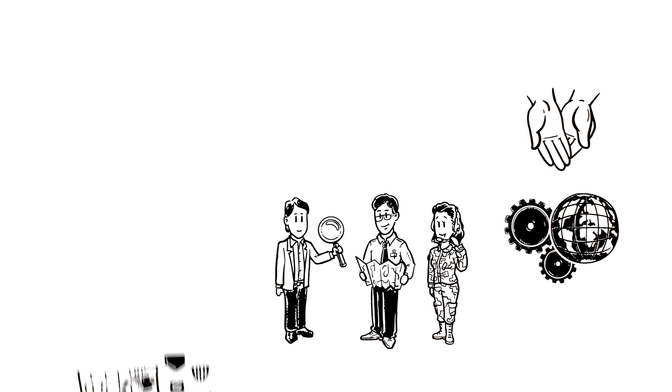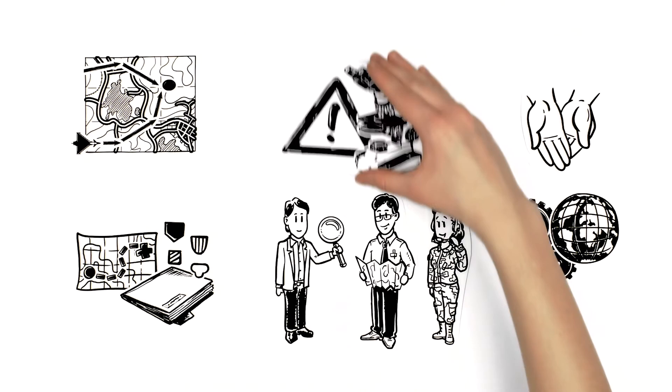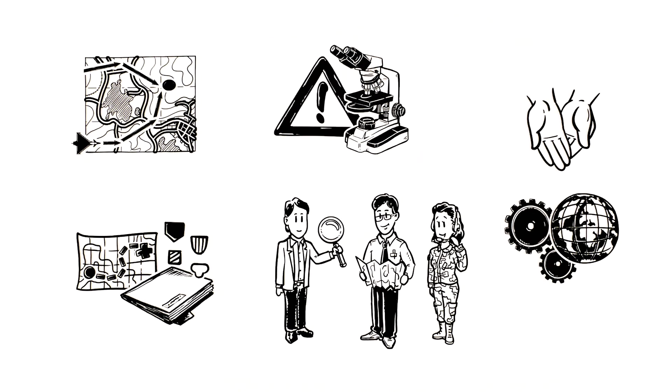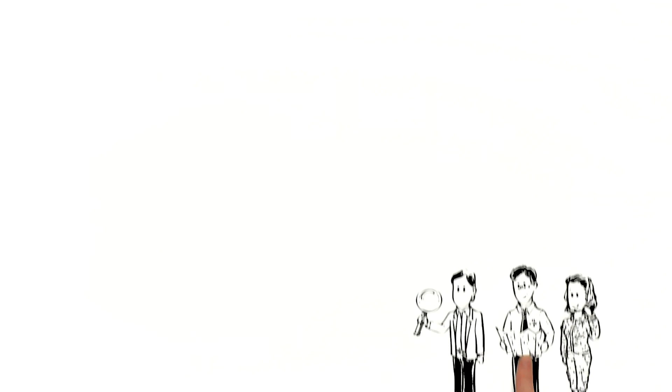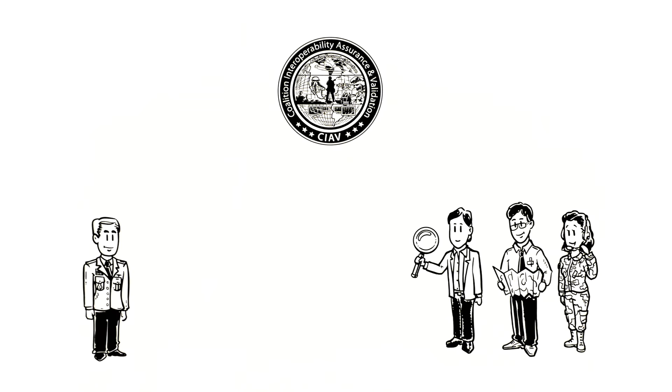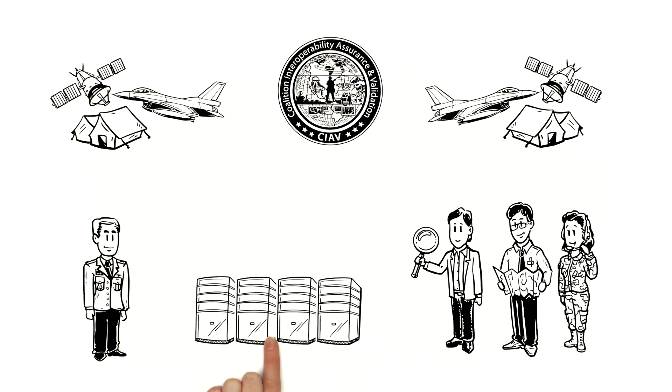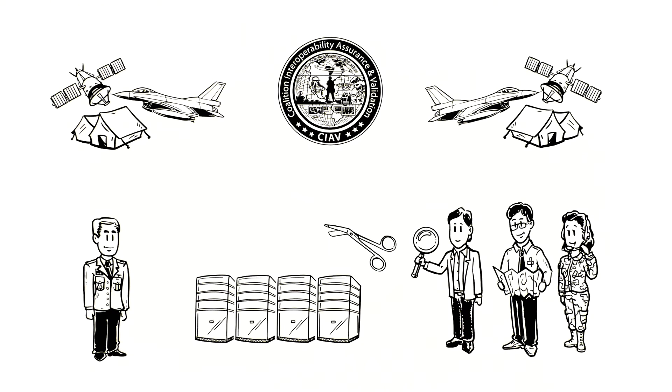They compile the required information to work the issue independently without affecting the day-to-day operations of the mission to examine the problem. By working independently, KIEV does not interfere with John's current mission environment. By replicating the mission in their distributed labs, KIEV dissects the interoperability issue and pinpoints the root of the problem.